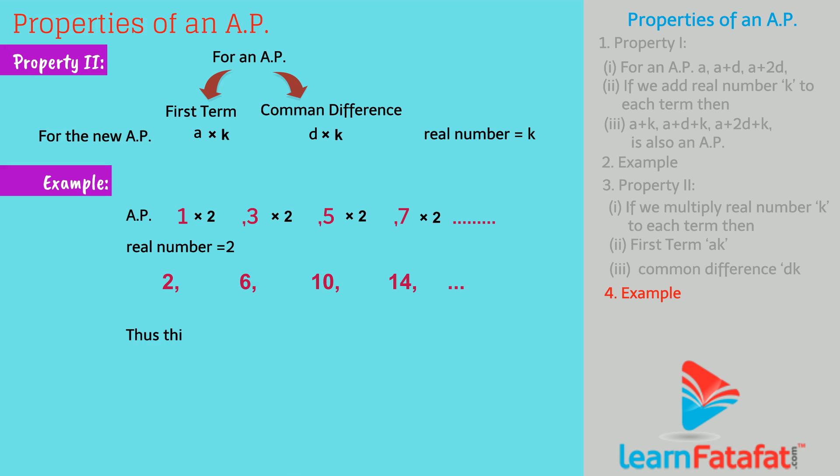Thus, this sequence is an AP with first term 2, that is 1 into 2, that is ak. And common difference is 4, that is 2 into 2, that is dk.